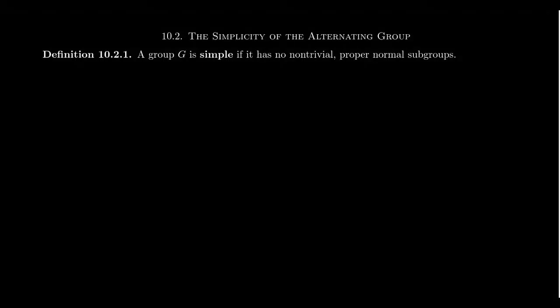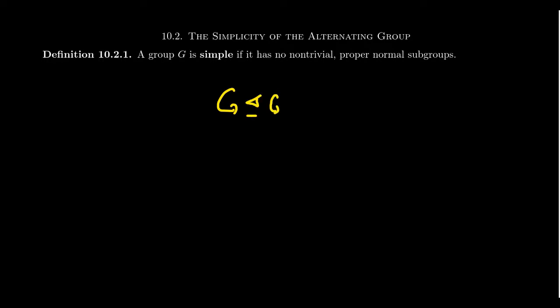We say a group is simple if it has no non-trivial proper normal subgroups. Recall that every group has at least two normal subgroups: the group itself is normal inside of itself, and the trivial group, which is also a normal subgroup. So these are guaranteed. But if there are no other normal subgroups inside of G, that's what we mean by a simple group.